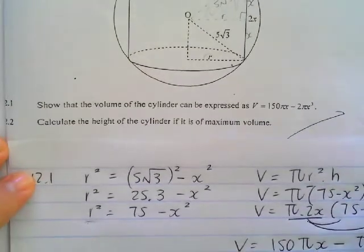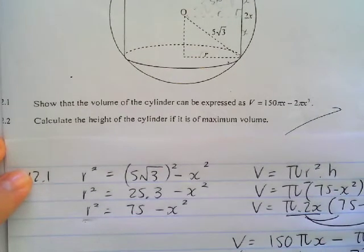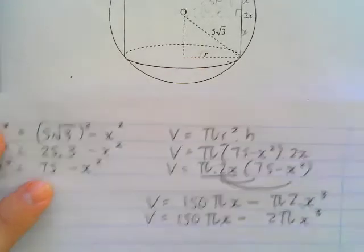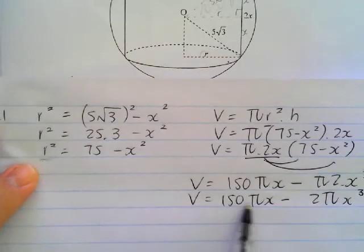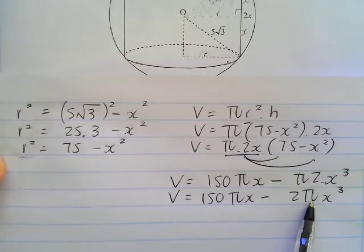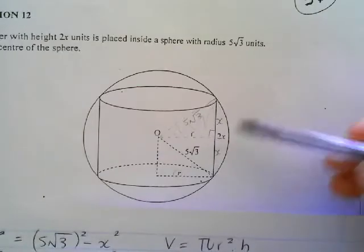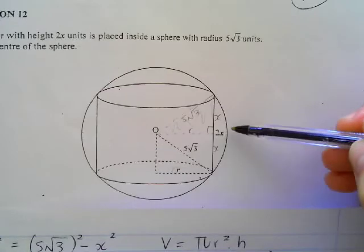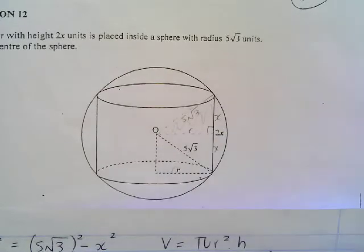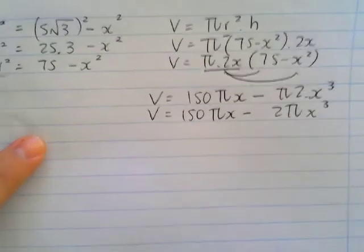12.2 asked us, calculate the height of the cylinder if it is to be of maximum volume. We've got our volume formula over here, and we need to work out the height in order for it to be a maximum. Remember, the height of the cylinder was 2x. So we're going to work out x and then multiply it by 2.